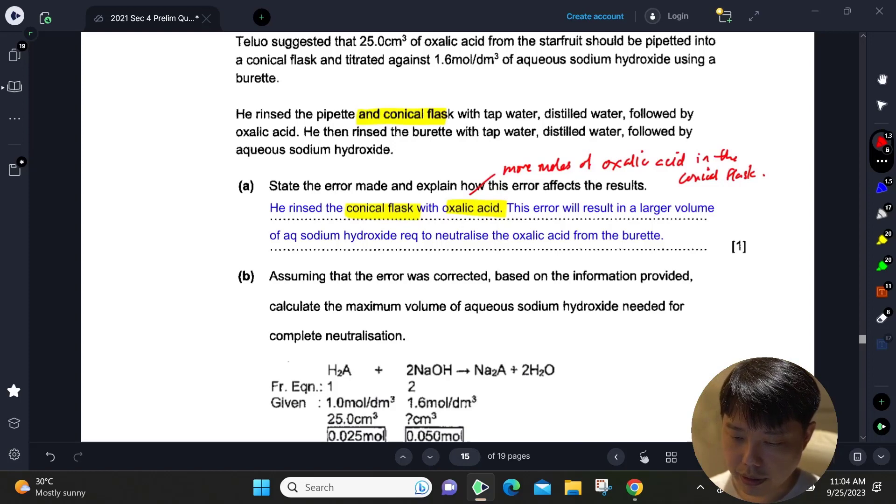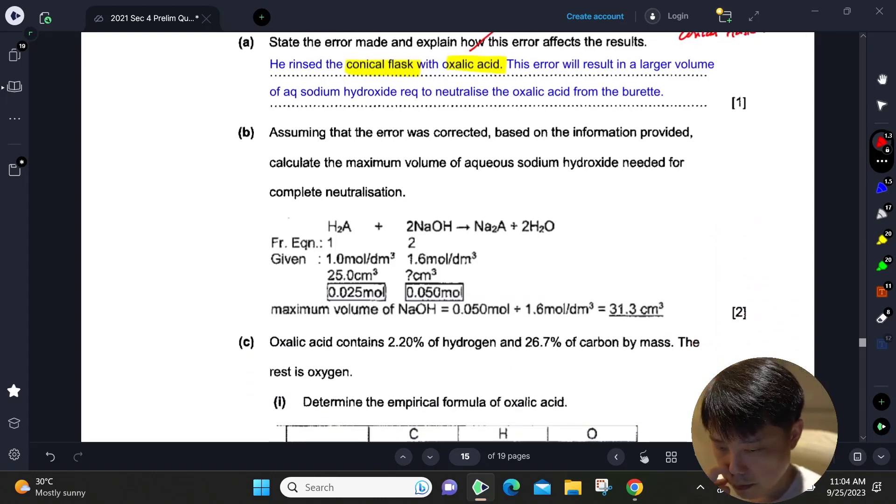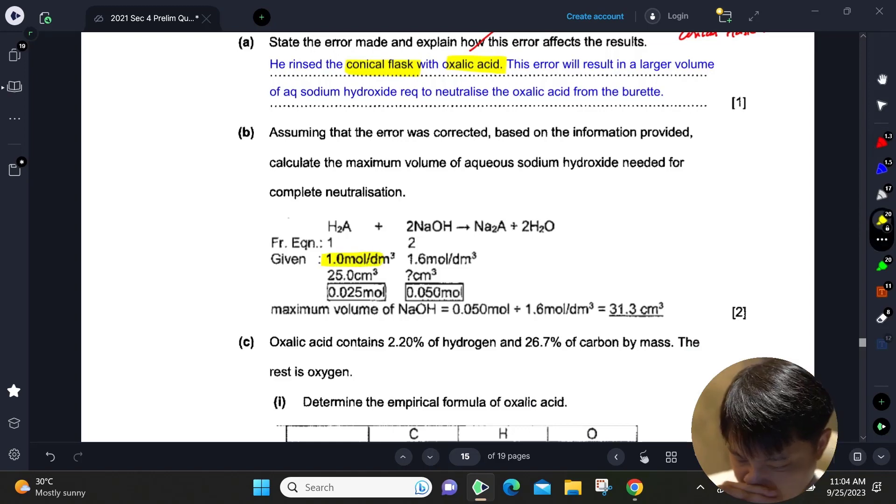Assuming that the error was corrected, based on the information, calculate the maximum volume of sodium hydroxide needed. If you look at the equation, based on 1 mol/dm³ and we have 1.6 mol/dm³, the ratio of acid to base is 1:2. If we have 25 cm³ of the acid, we get about 0.025 moles of acid, but the H+ it reacts with is 0.050 moles.